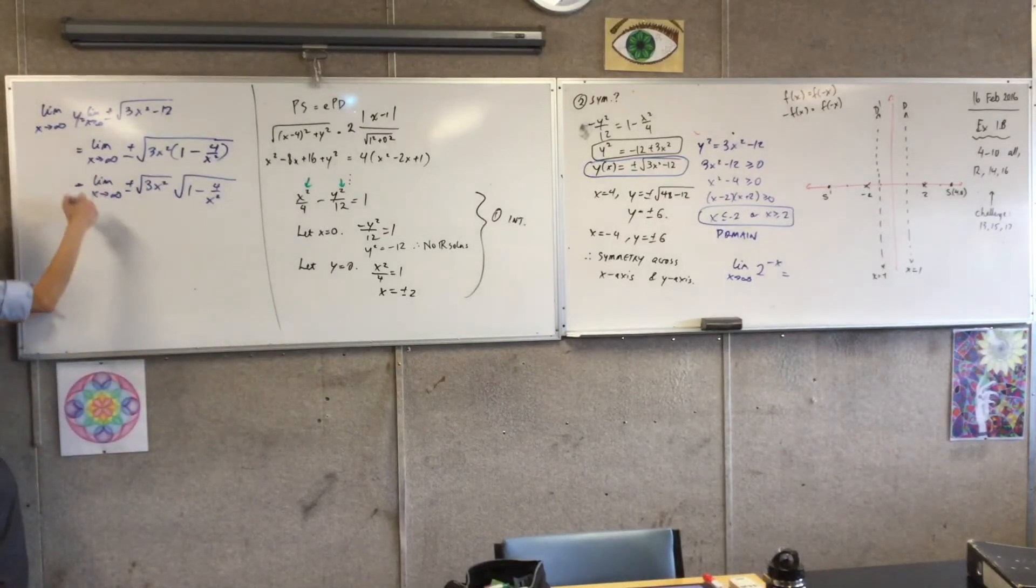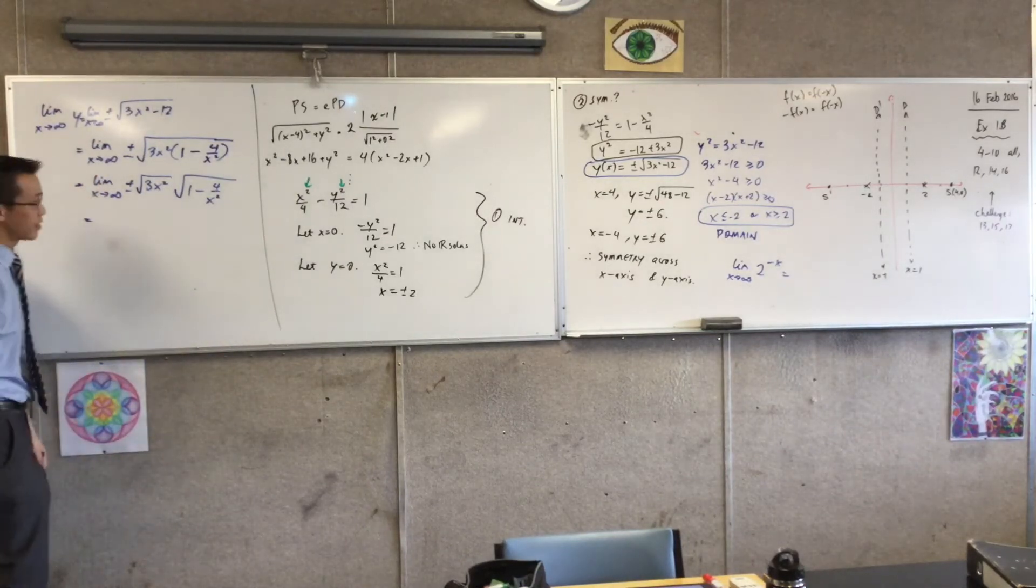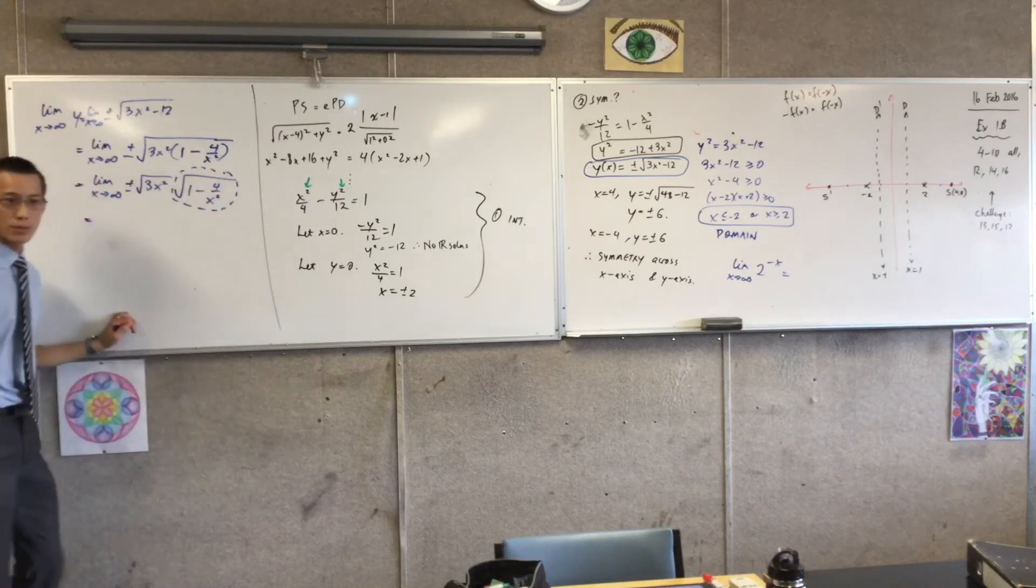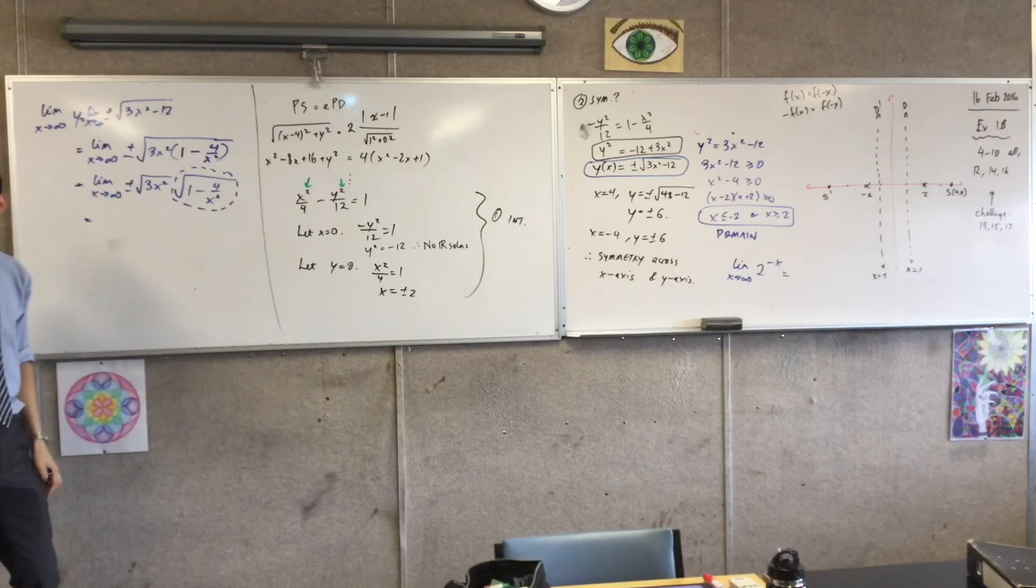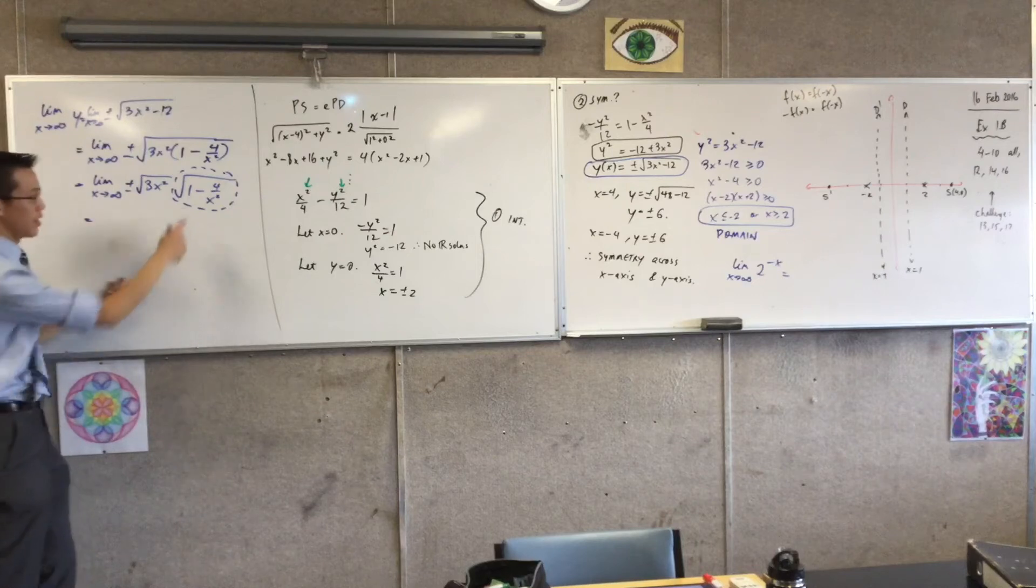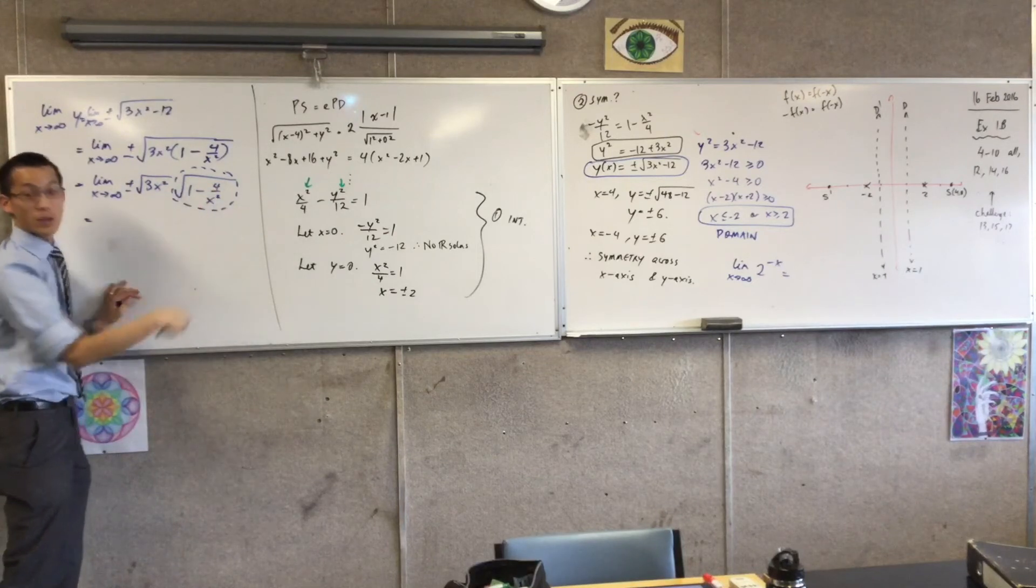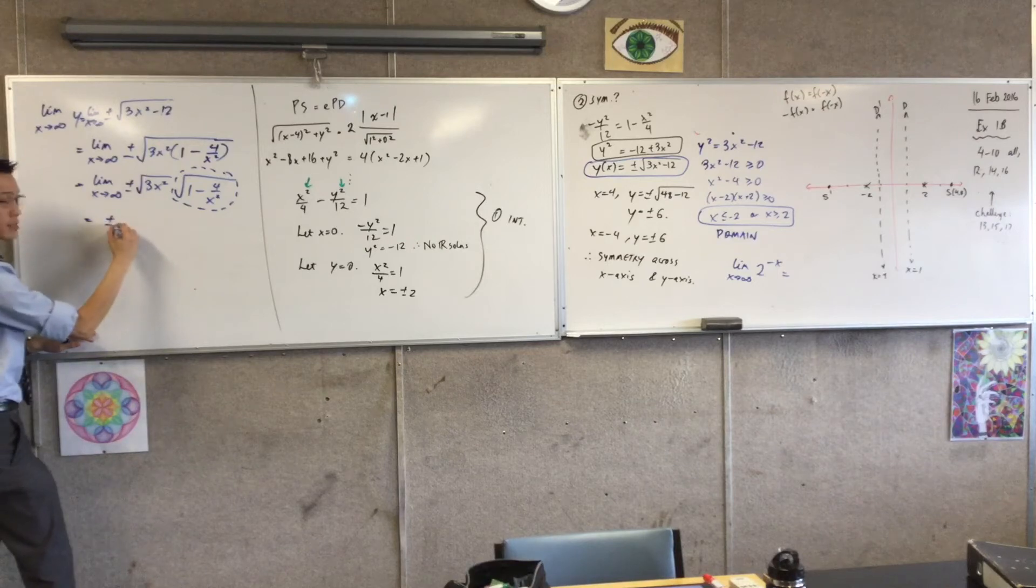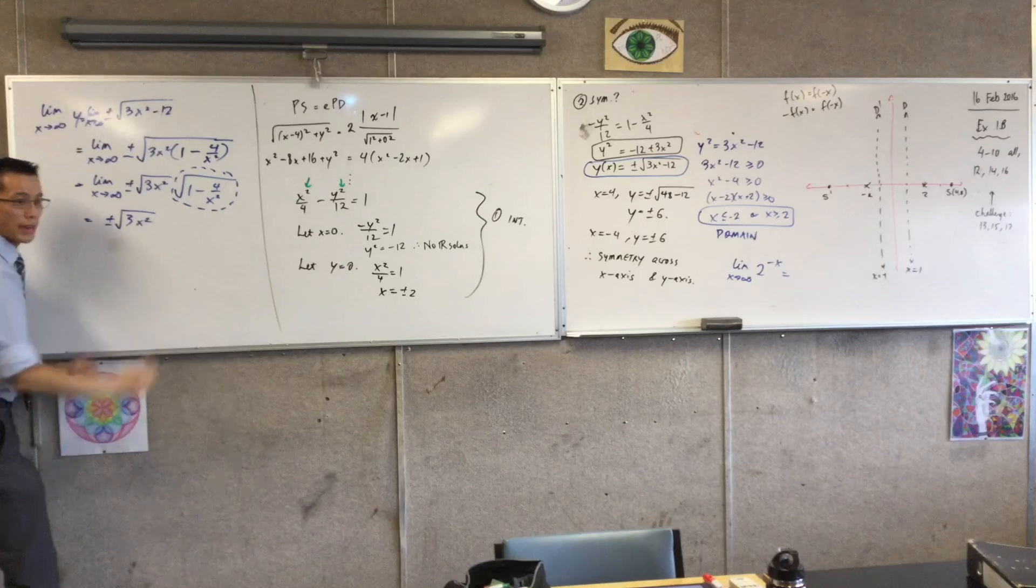So now, I'm actually going to evaluate this limit. I'm going to evaluate the limit. So what happens to this whole thing, that whole square root, as x approaches infinity? One. It goes to one. Or, more specifically, 1 minus 0. The square root of 1 minus 0, which, of course, is 1. So, therefore, you're just getting this guy, right? Plus or minus the square root of 3x squared, right?